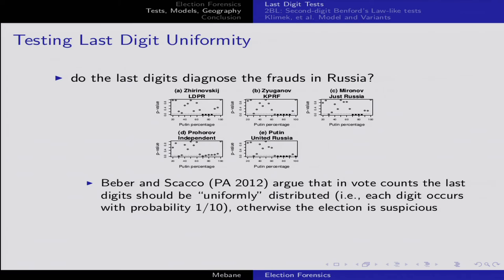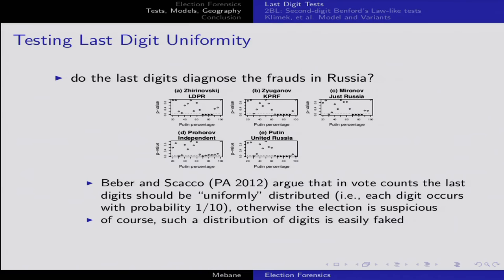The problem with this last significant digit thing is you can easily fake uniform digits — if you have any pseudo-random number generator, probably on a calculator now, you can easily fake these numbers. Beber and Scacco have evidence that unsophisticated fraudsters in Nigeria working on paper are faking it and you can catch them. But the Russians are a little more sophisticated. In fact, fakery in the last digits happened. My position is I've shown strong evidence that there is fraud in those votes.